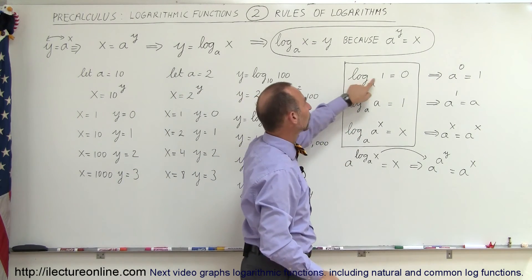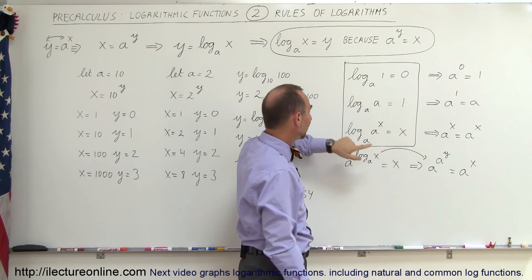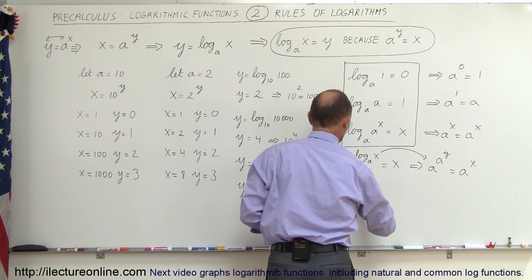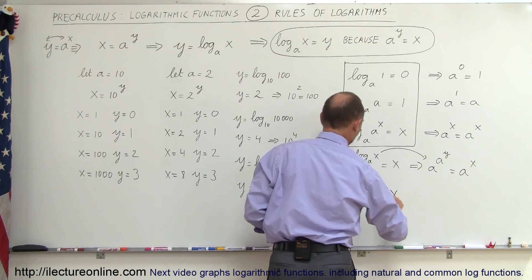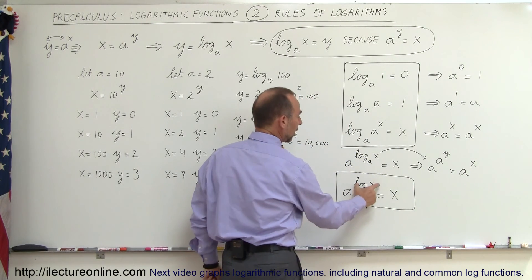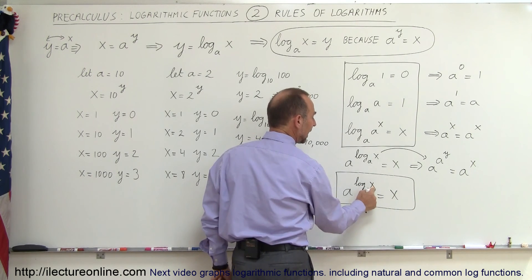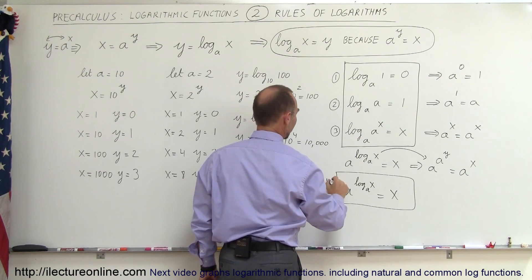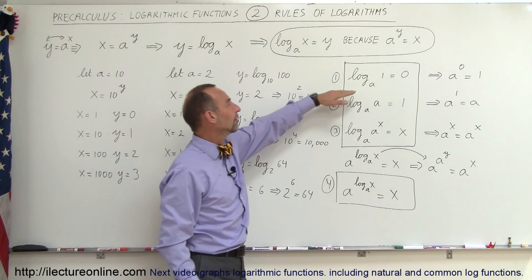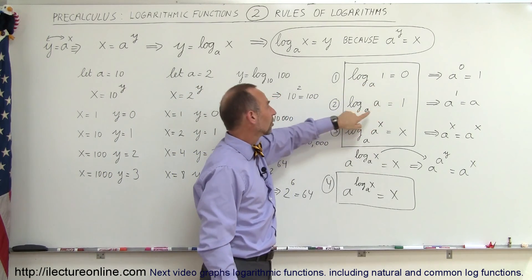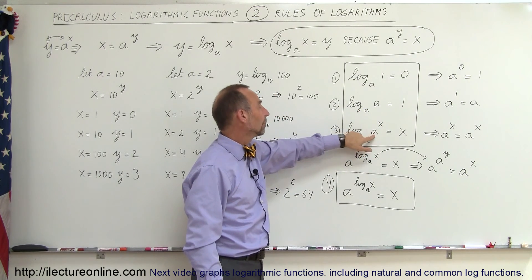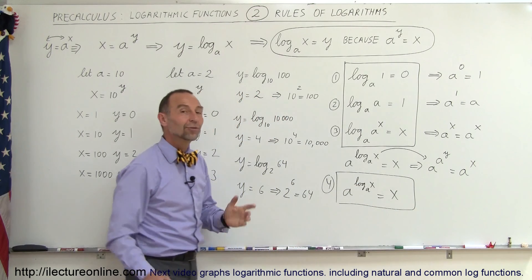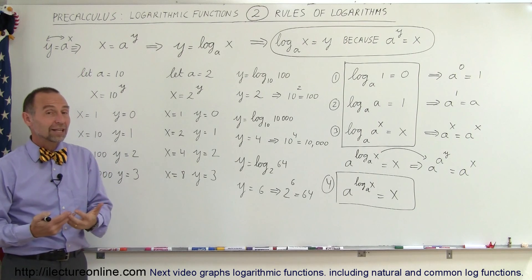To summarize the four rules: first, the log of 1 is always zero. Second, the log of the base a is always one. Third, the log of the base raised to the x power is always x. And fourth, a raised to the log base a of x is always equal to x — when we place a logarithm as the exponent, we get back x. Remember these four rules, as they come in very handy when working with logarithmic functions.